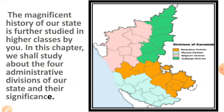You will learn a brief about Karnataka in this chapter. We shall study about the four administrative divisions of the state and their significance. In this semester, we will cover Bangalore division and Mysore division. Next semester you will learn about Belagavi division and Kalaburagi division. Keep in mind — we are in Vijayapur district, and Vijayapur district comes in Belagavi division.